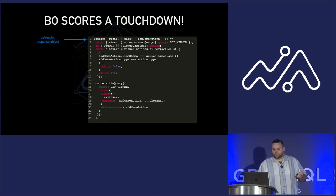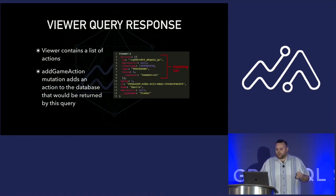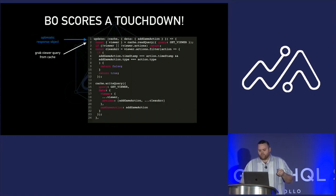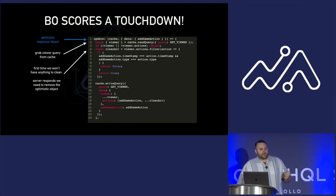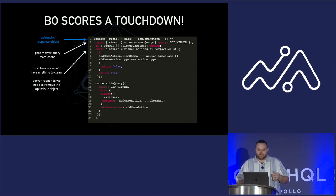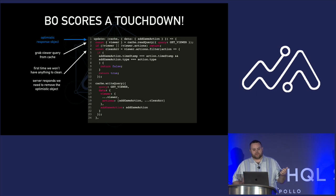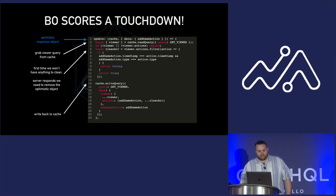The response from this optimistic response function is then pumped into the update function, where the optimistic response decides what we're going to do with our local cache. The viewer query response is that list of actions we talked about earlier, which is going to be updated as we add a value to our database. What we do is read the cache and pull that viewer query. The first time through with our optimistic response, we don't really need to clean our array, but it's done for redundancy. The second time through with our server response, that array will have our optimistic object, so we need to pull that out so we don't end up with duplicates. Then we write it back to our cache.